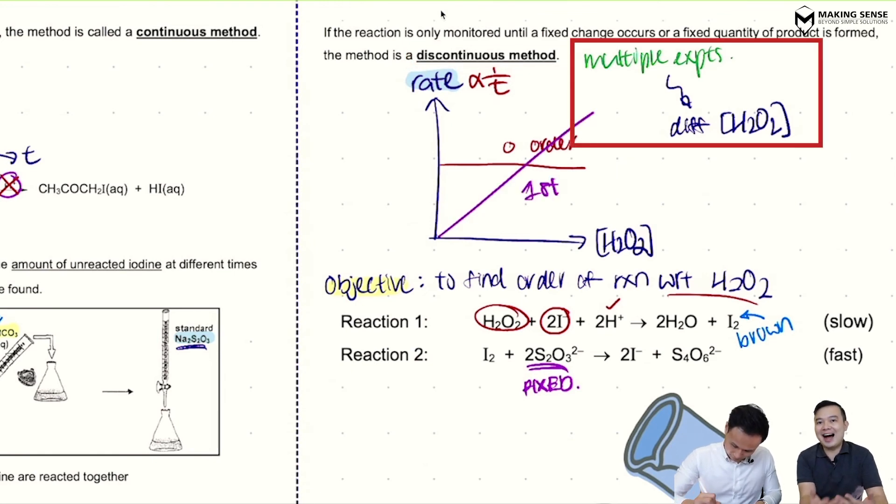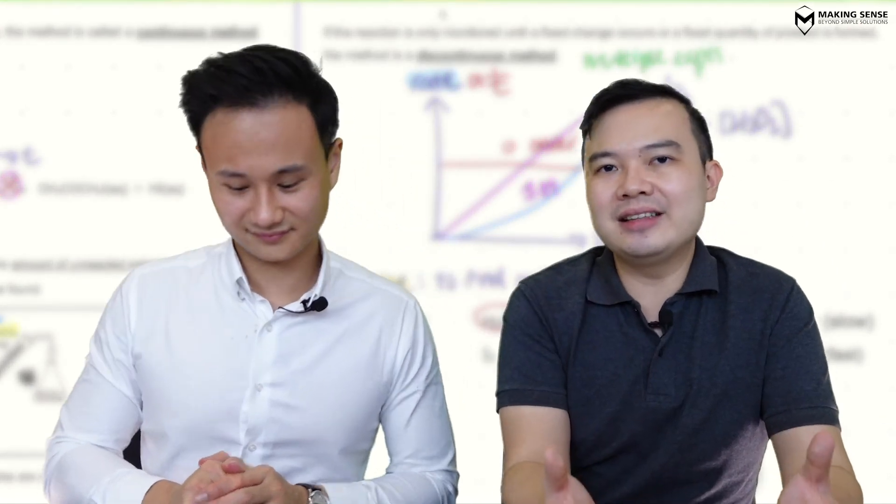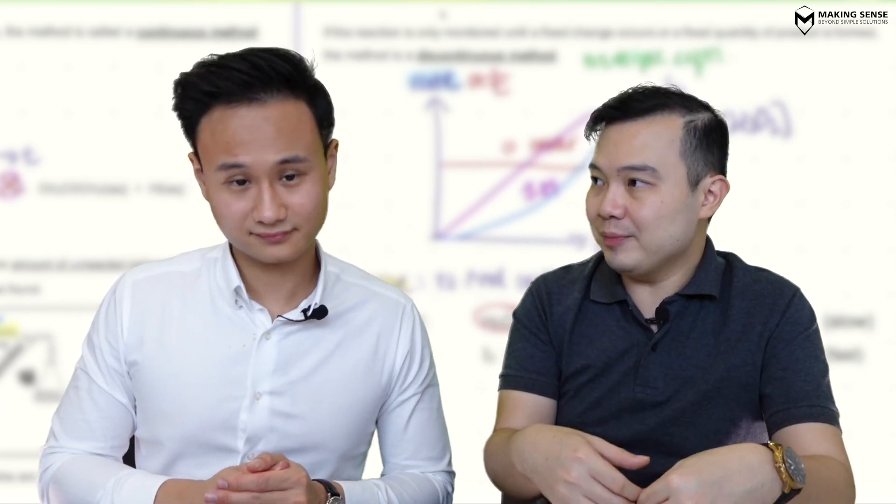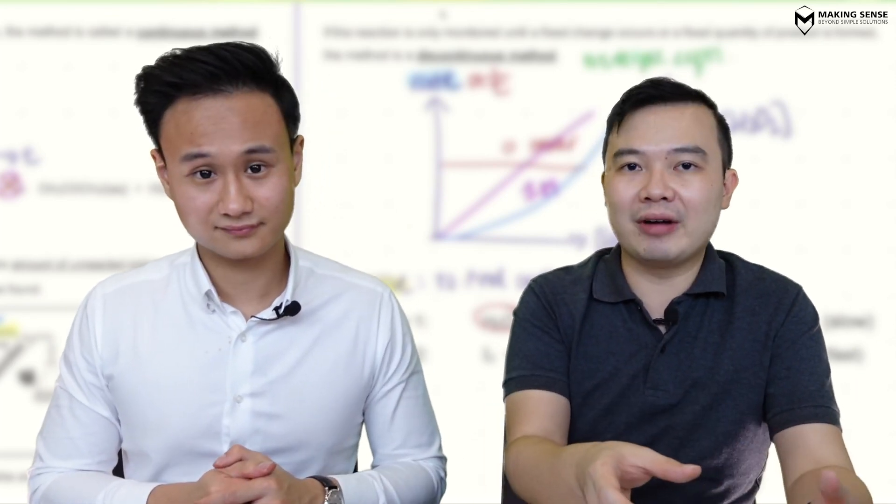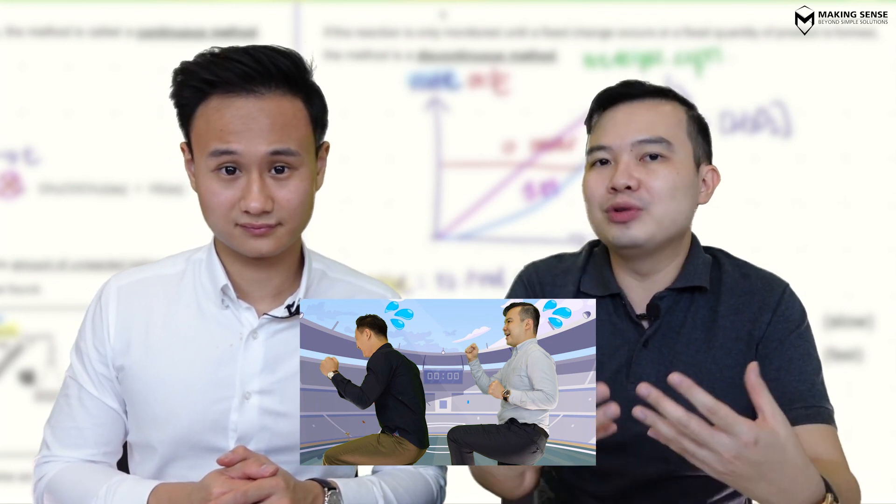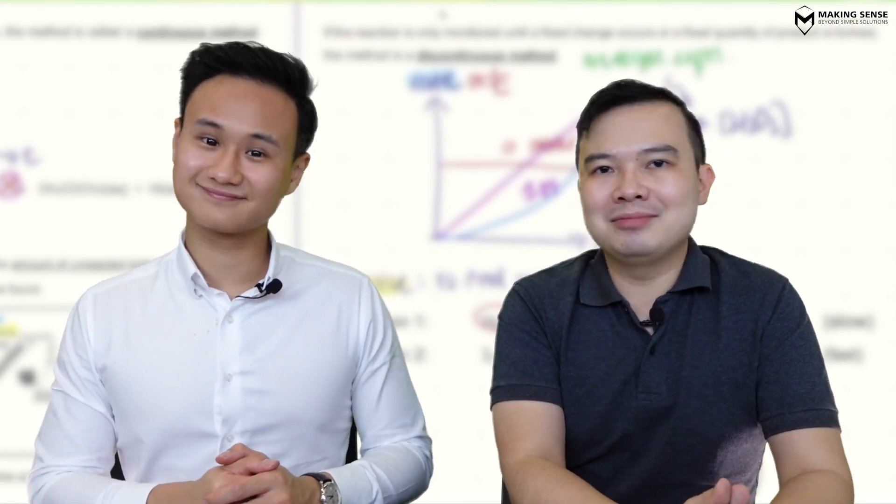So this whole thing is known as the iodine clock experiment. And usually this is done in a discontinuous method. Meaning that you have to perform multiple experiments with varying concentration. From there, you take a look at how it affects the rate. So that's it. So hopefully you can bring this into your practical as well. As you're doing some kinetics experiments, think about whether is it continuous and discontinuous. And look at what are the graphs that you are drawing. And use it to link it back into the theory. We have seen this in the very first video. The different shapes of the graph would give you different order of reactions. So that's it. Thanks everyone. See you guys.